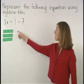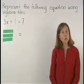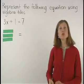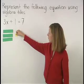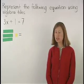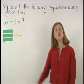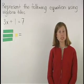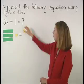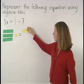Next, we have plus 1 or 1 positive constant which we can represent with 1 yellow square. On the other side of the equal sign, we have 7 or 7 positive constants which we can represent with 7 yellow squares.